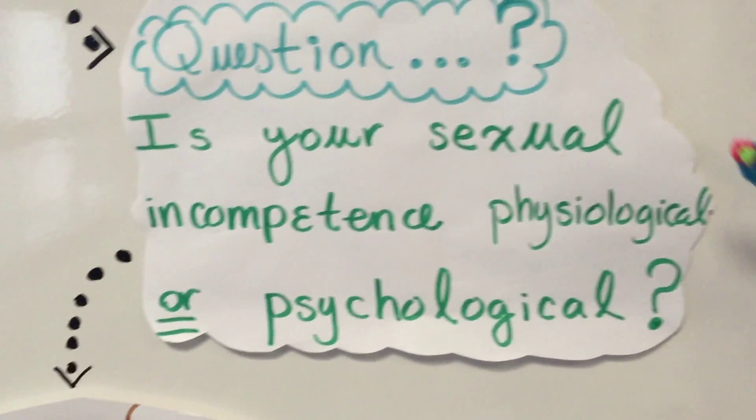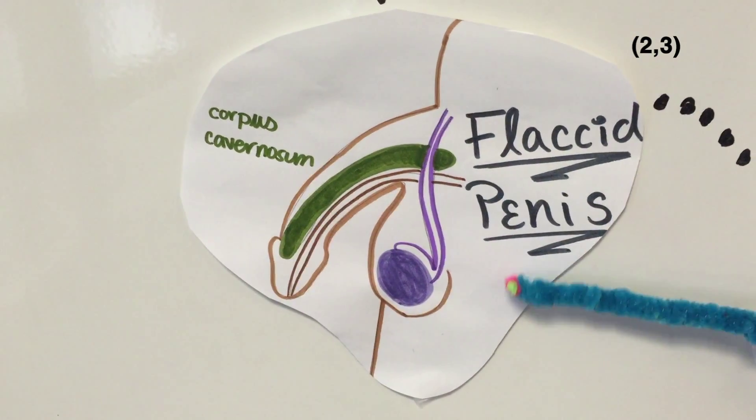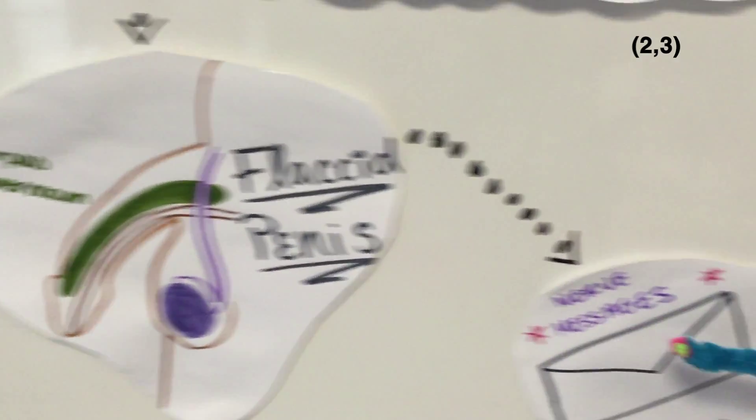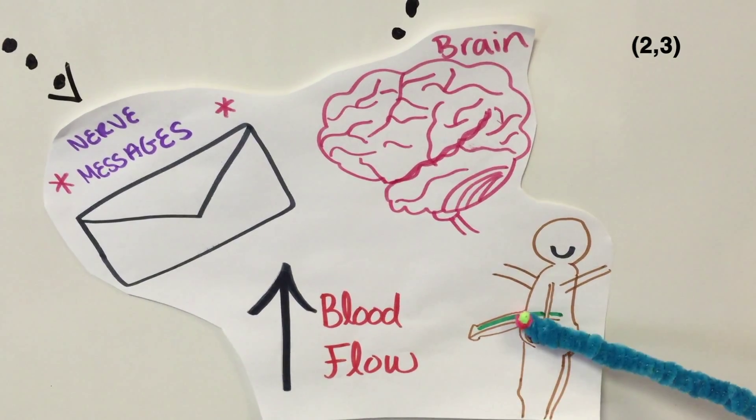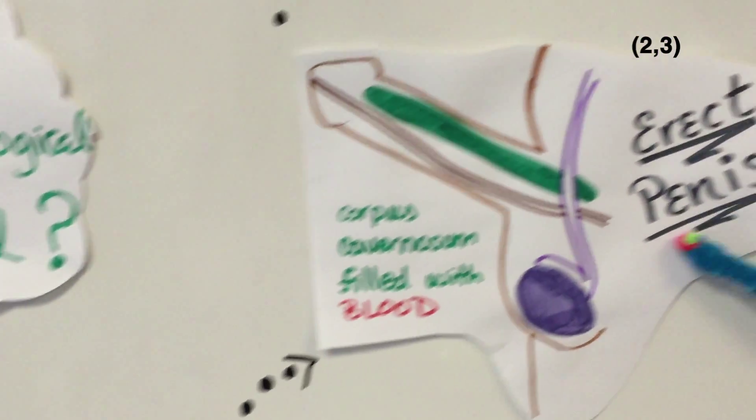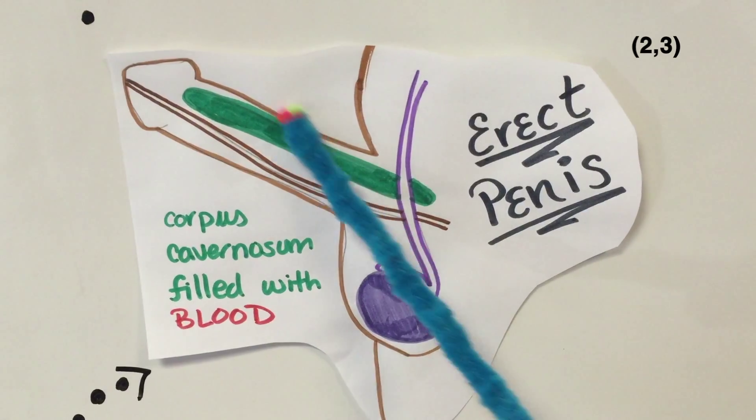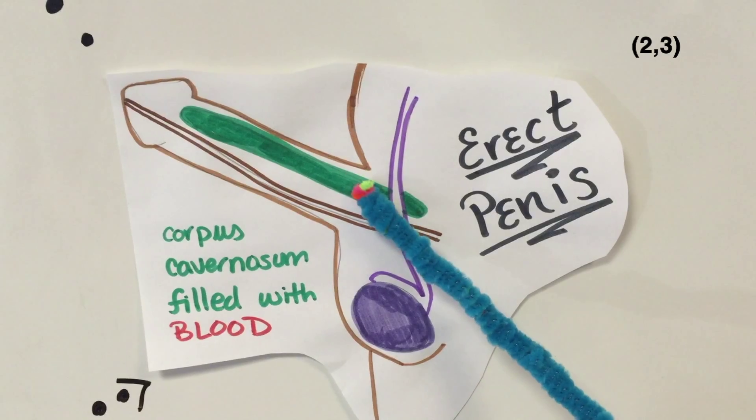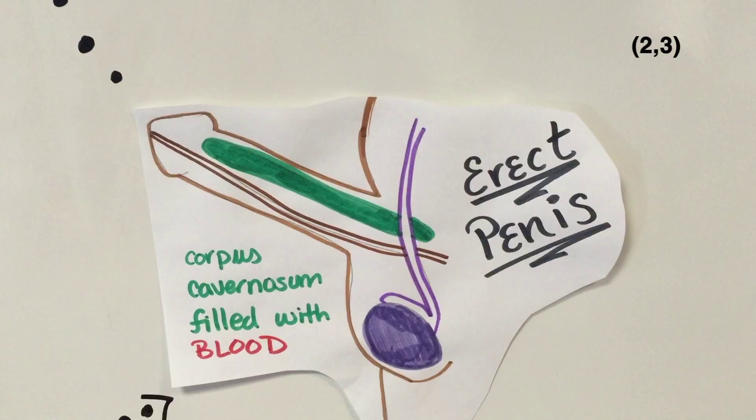Before we move on to answering our question, let's familiarize ourselves with how erections work. The unerected penis that is not sexually aroused is soft, limp and slack. When you become sexually aroused, there are nerve messages that are released from the brain to prompt the body to increase blood flow to the penis. The penis is equipped with two erection chambers called the corpus cavernosum. The chambers are filled with erectile tissues called corporal sinusoids, which are made of mostly muscle. The muscle relaxes, the erectile body is filled with blood, and voila, an erection occurs.